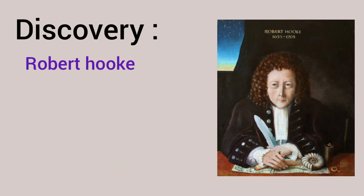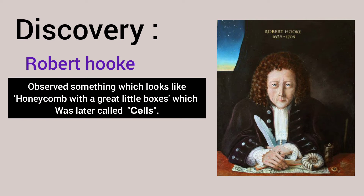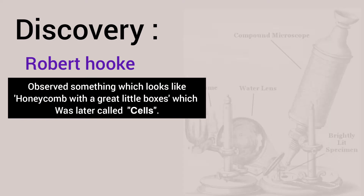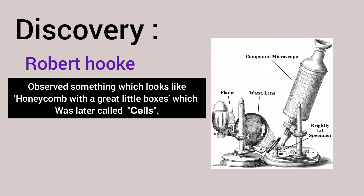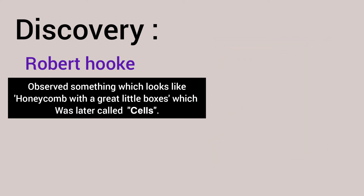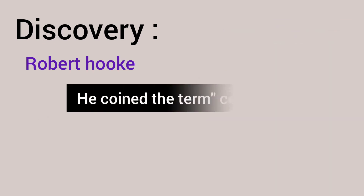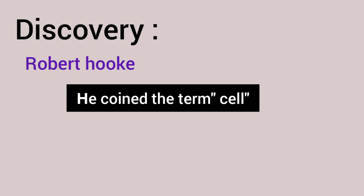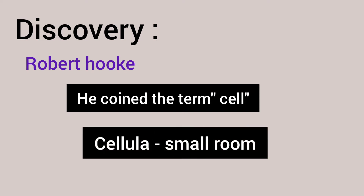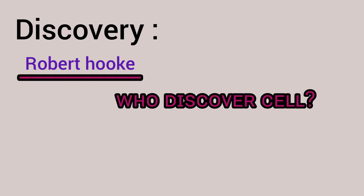Who discovered cells? Robert Hooke is a scientist. He observed cork tissue from a plant under a microscope. It looked like a honeycomb structure — small rooms. He named these 'cells,' meaning small rooms. So the discoverer of the cell is Robert Hooke.